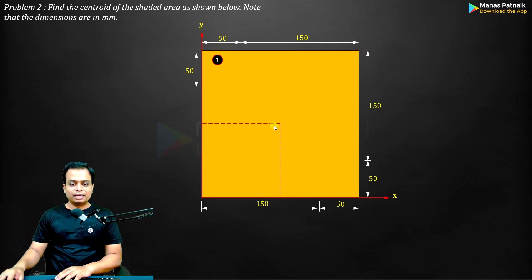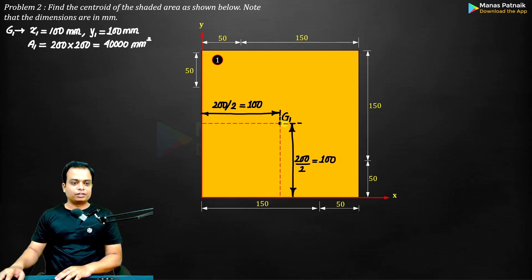So half of 200 will be x_c or x₁, and half of 200 will be y₁. Very simple. Area is very simple: 200 multiplied by 200 is going to give you the area. Next is a right angle triangle.